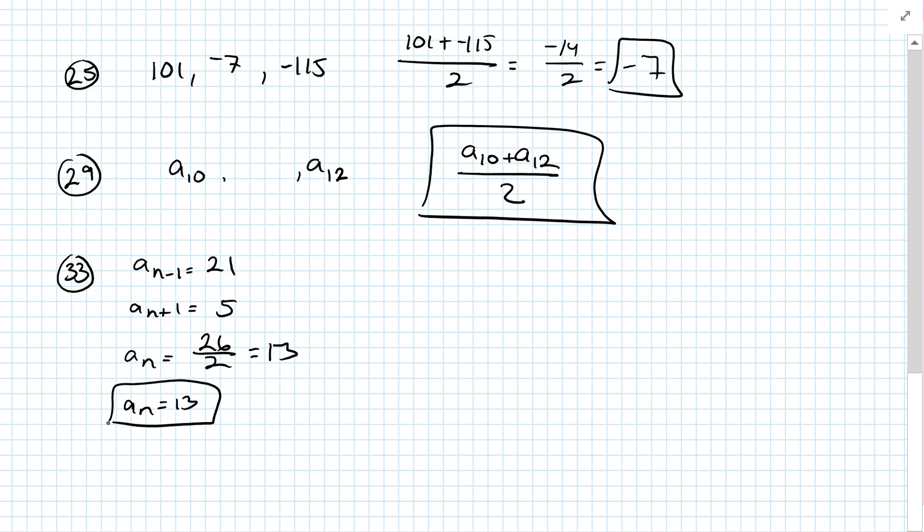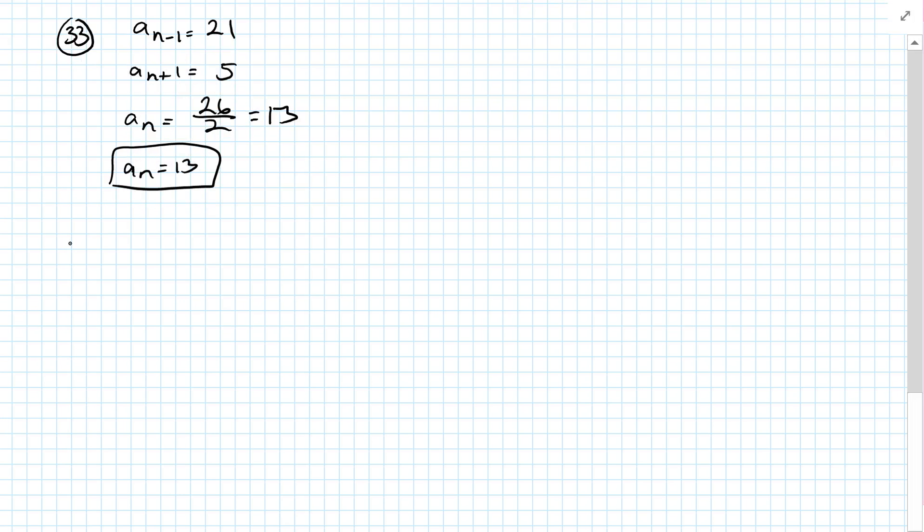Okay, skipping every other one. So 35 we skip, do 37. 37. A of N minus 1 is 9. A of N plus 1 is negative 11. So we sum those. A of N is going to be the sum of those, which would be negative 2 over 2, which would be negative 1. So A of N is negative 1.